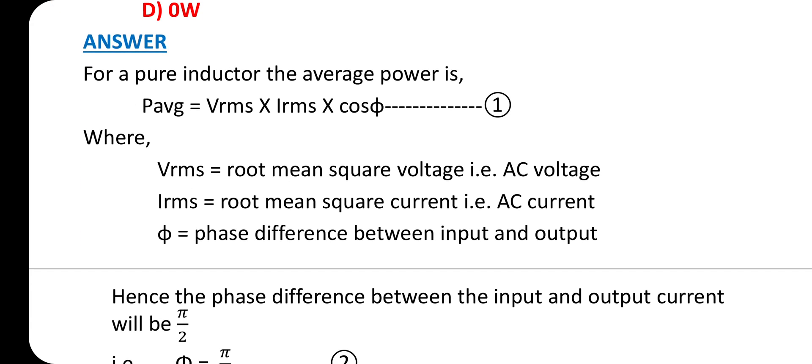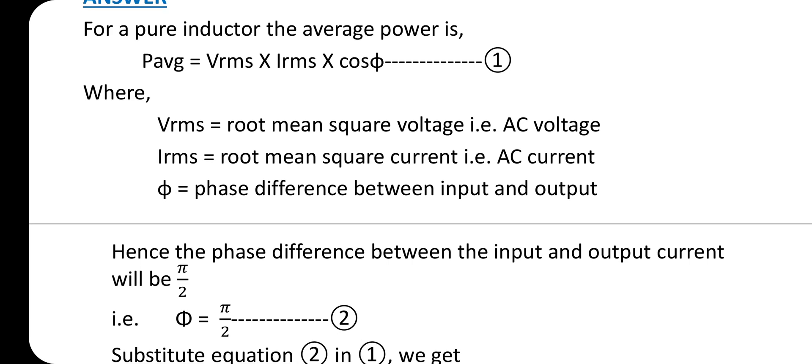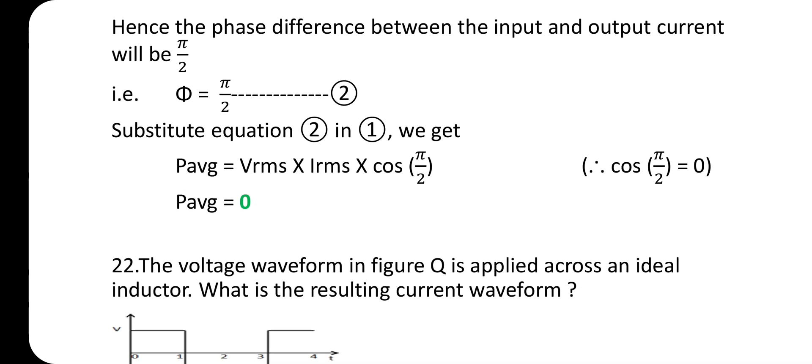For a pure inductor, the average power is given by P_avg = V_rms × I_rms × cos(φ), where V_rms and I_rms are root mean square voltage and current respectively, and φ is the phase difference between input and output. The phase difference between input and output current is φ/2, so cos(φ/2) equals 0, giving P_avg = 0.